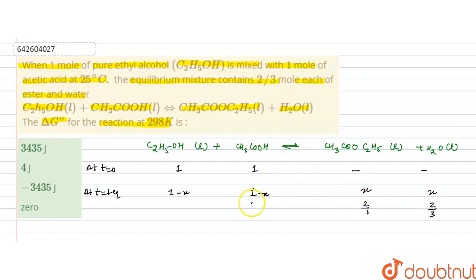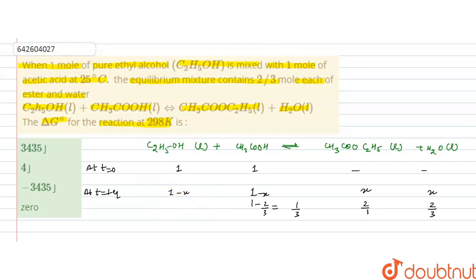So 1 minus 2/3 equals 1/3. The remaining moles of ethyl alcohol are 1/3, and the remaining moles of acetic acid (1 minus x) are also 1/3.